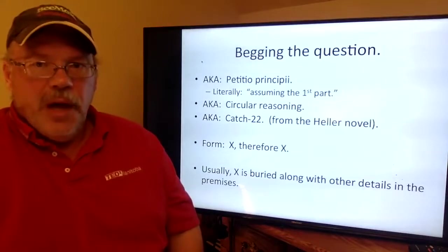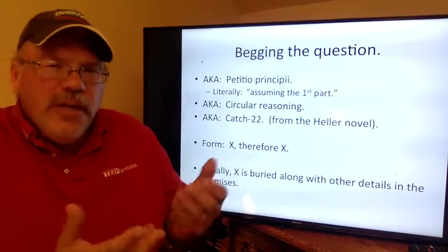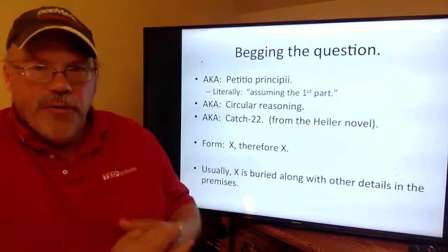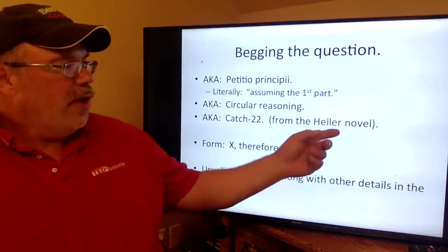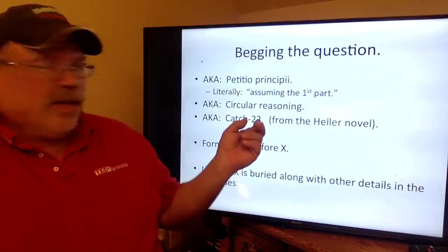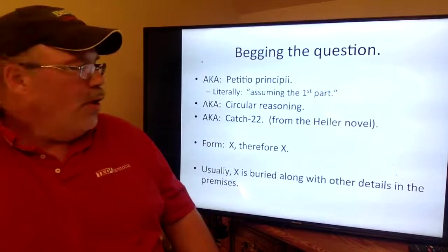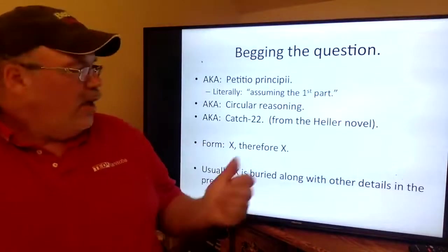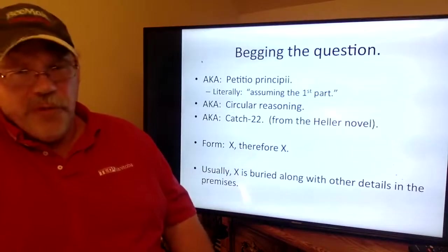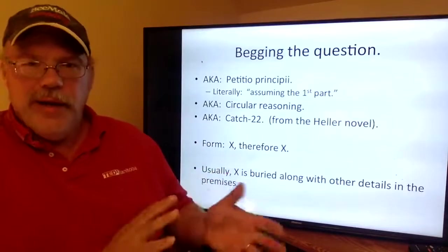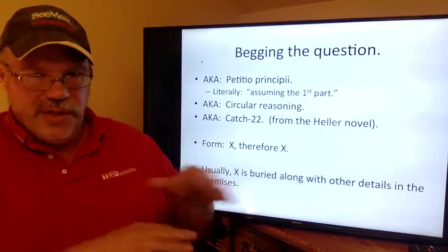The next fallacy is begging the question, also known by its Latin name petitio principii, circular reasoning, or Catch-22 — from the great World War II novel where the army rule book says the army can do whatever it wants. In its simplest form: statement A, therefore statement A. That's obvious when stated directly, so when you try to slip this one by, you hide the presumption with extra words to create camouflage.